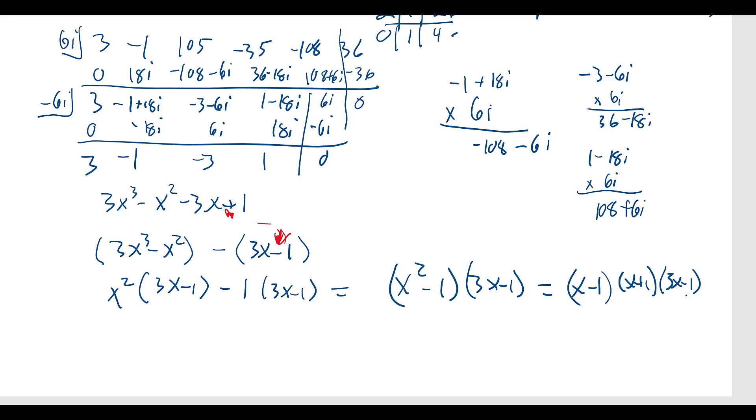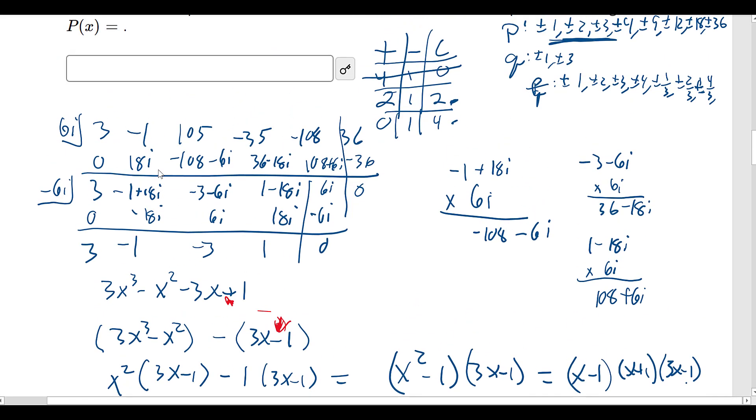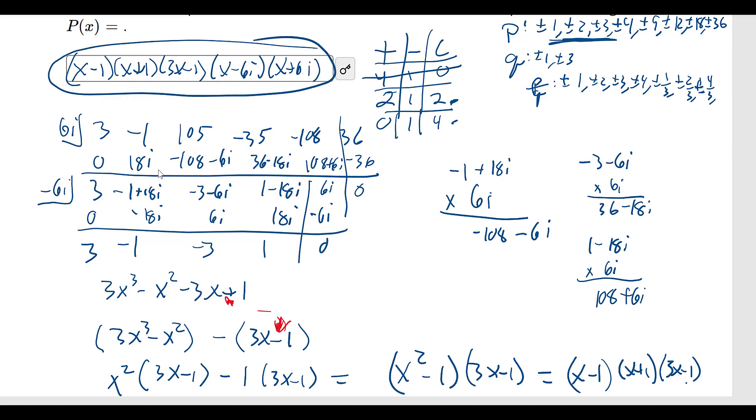Okay, so we have all our factors now. We can come back up here. We have x minus 1 times x plus 1 times 3x minus 1 times x minus 6i times x plus 6i. And that would be our answer. Okay, hope that helps. Thank you.